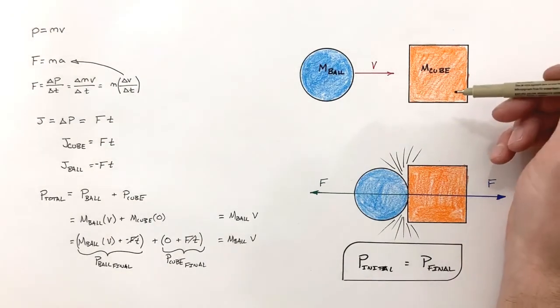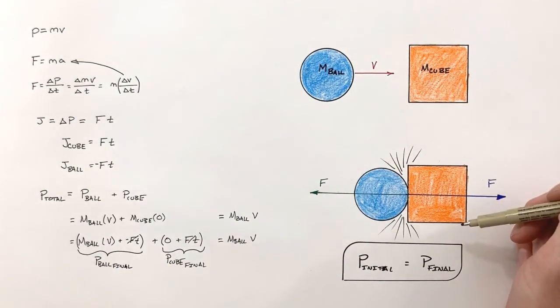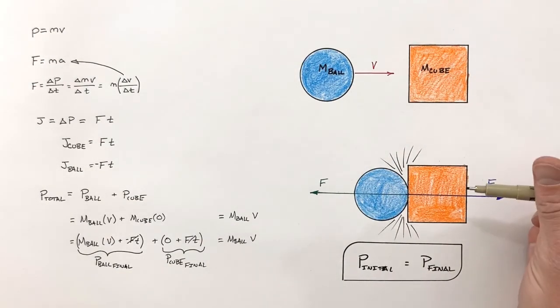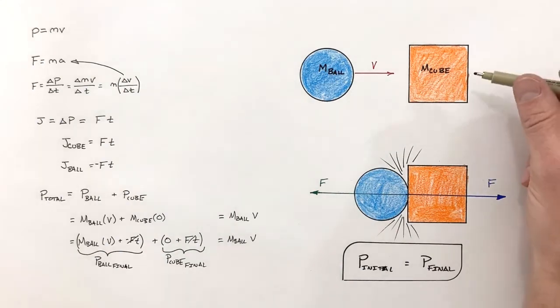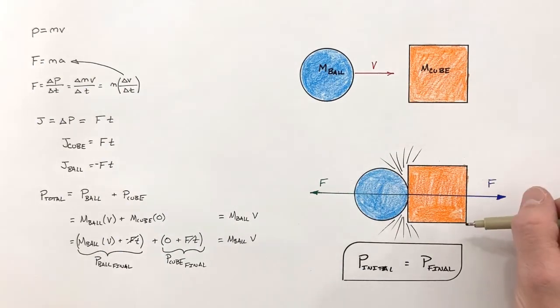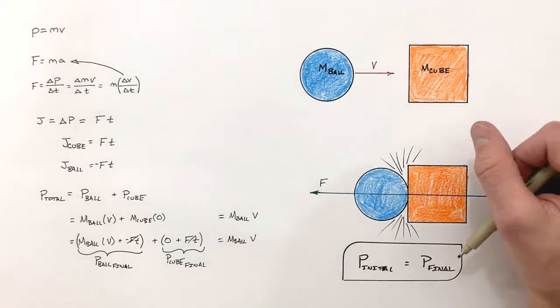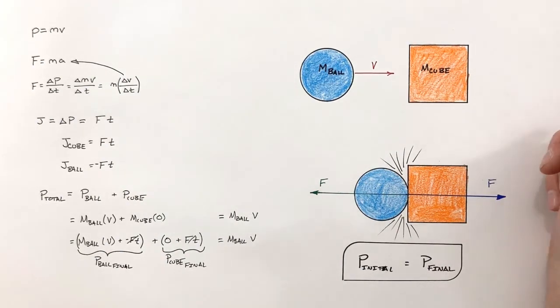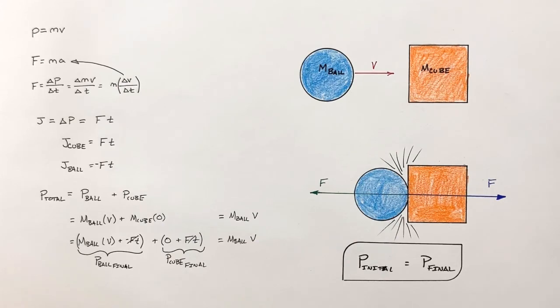There are several different types of collisions and we'll talk about those later on. For now, we just want to look at collisions in general and realize that the total momentum in any and every collision is conserved. And on that note, that's all for now.